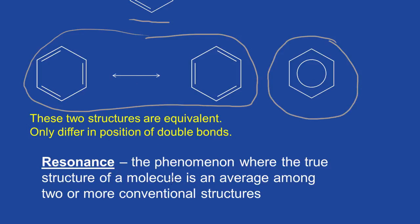Benzene undergoes resonance, where the true structure of the molecule is actually an average among two or more conventional structures. This means these are not single and double bonds — those six electrons are shared equally in that ring. The electrons are delocalized about the ring, so this is actually the better structure. Each one of these six bonds has a bond length somewhere between a single and a double bond — not quite a single bond, not quite a double bond, somewhere in between. Resonance stabilizes a molecule and provides a lot of stabilization.